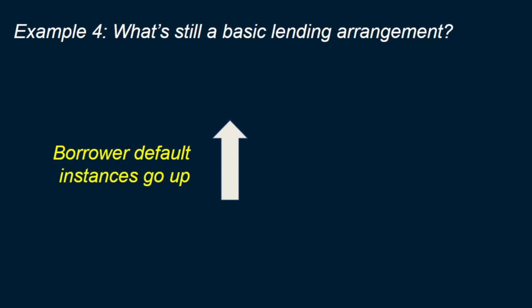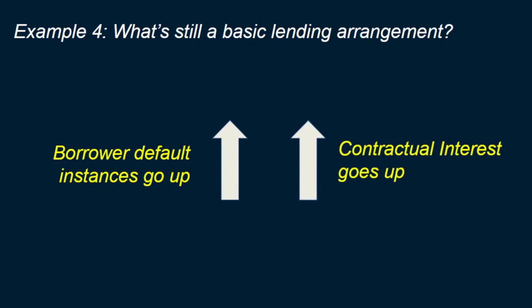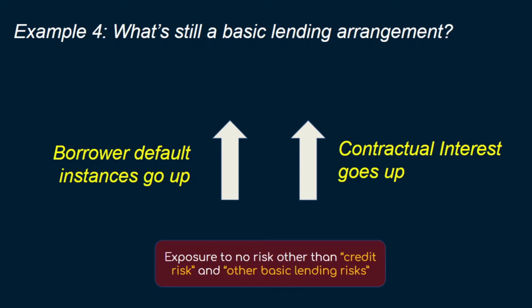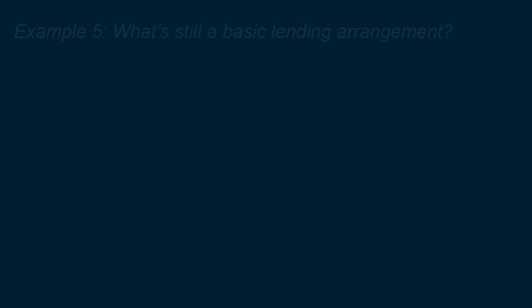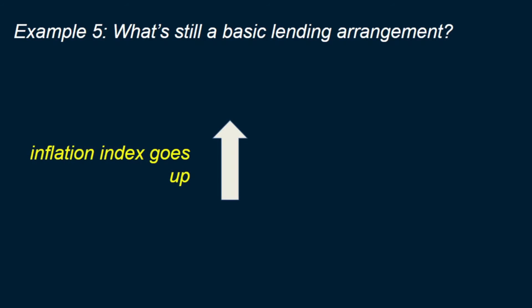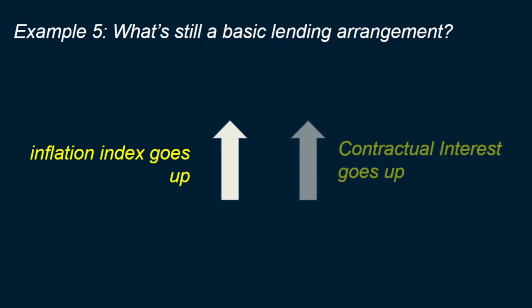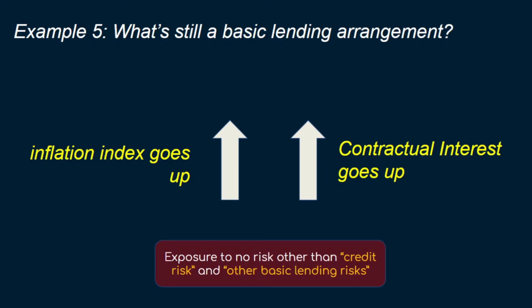Moreover, if the contract stipulates that interest will increase if the borrower defaults on some payments, it can still be a basic lending arrangement — provided the increase in interest corresponds to the increase in the counterparty's risk of default. Also, if interest is linked to an inflation index such as the consumer price index, the cash flows are still considered consistent with the basic lending arrangement, because it simply means the interest would remain the same in real terms. All these examples help us understand whether the contractual terms expose the lender to risks other than the basic lending risks — so far we had the risk perspective.